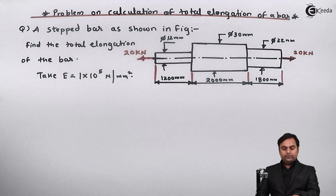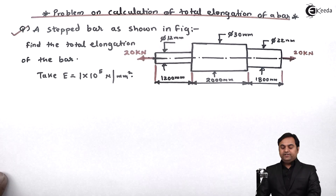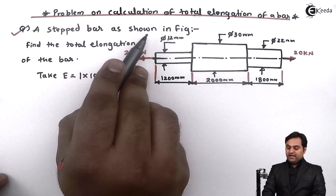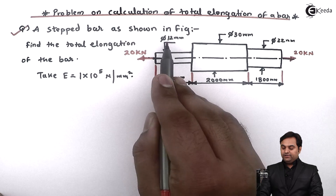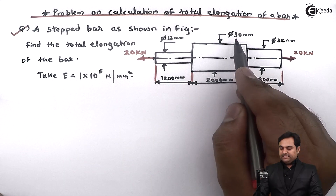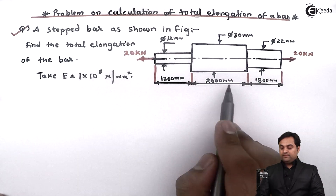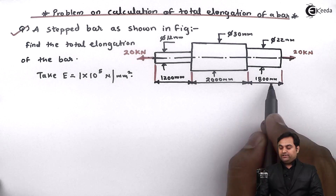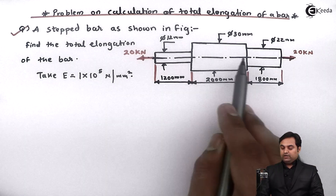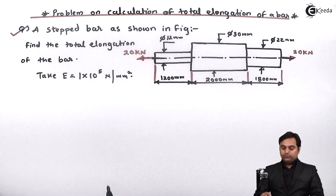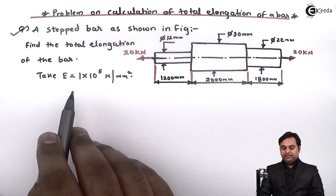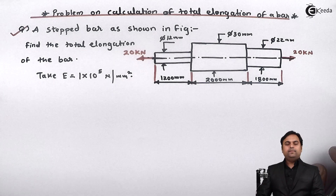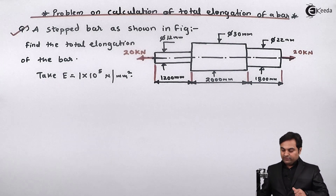Hello friends, in this video we are going to see how to calculate the total elongation for a bar. A stepped bar as shown in the figure is given. This bar has 12 mm diameter for 1200 mm length, next it has 30 mm diameter for 2000 mm length, and 22 mm diameter for 1800 mm length. It is subjected to a tensile load of 20 kN. Find the elongation of the bar. Take Young's modulus E = 1×10⁵ N/mm².